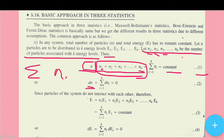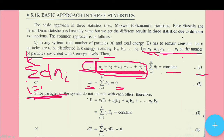The summation from i=1 to k of Ni is constant. When we differentiate, the summation of dNi equals zero. This gives us equation number 2.